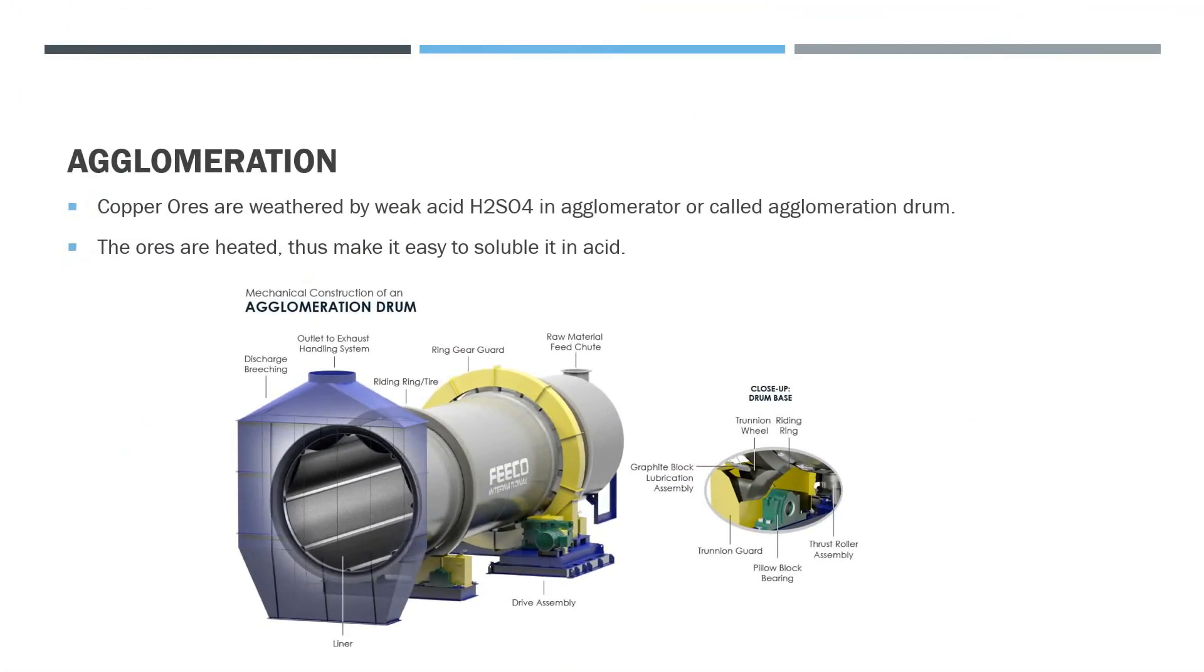The next part is agglomeration. The product that has been resized or reduced in terms of size, the product will be wetted by weak acid, which is sulfuric acid in an agglomerator or this machine also called agglomeration drum. Why we need to wet it after the acid has been sprinkled onto it? We want to make this particular for the further process.